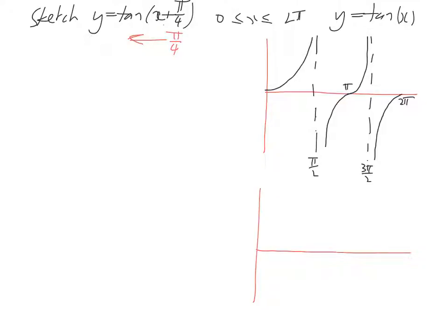So our stock standard tan of x graph looks like this, where it starts at 0, goes up at pi on 2 where it asymptotes. Another intercept there is at pi, asymptote through pi on 2, and then out at 2 pi.